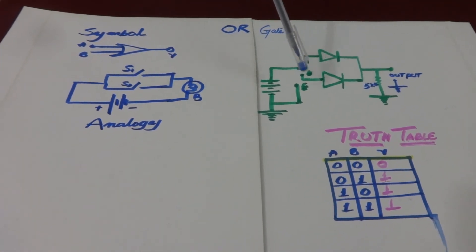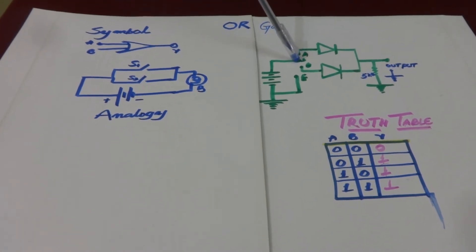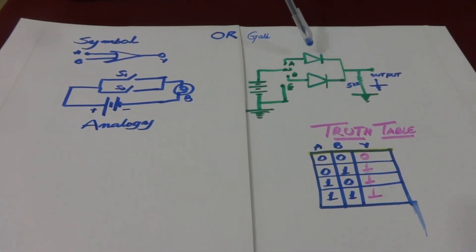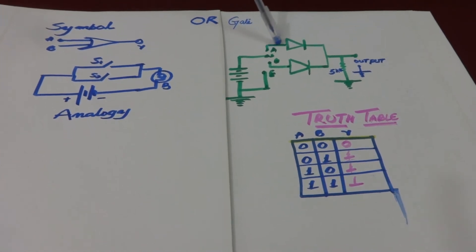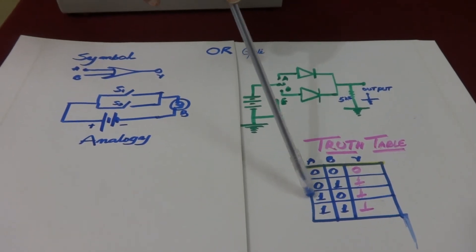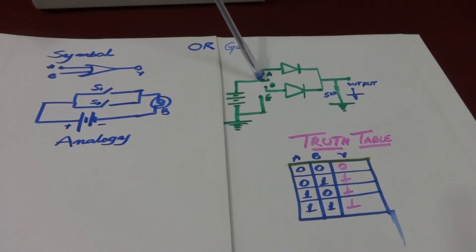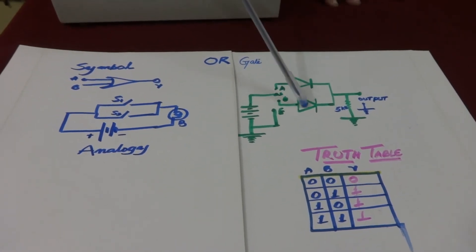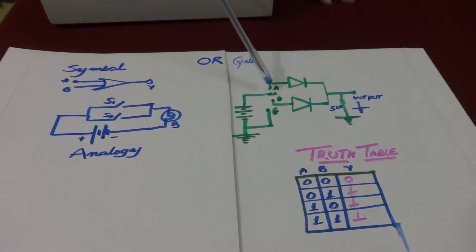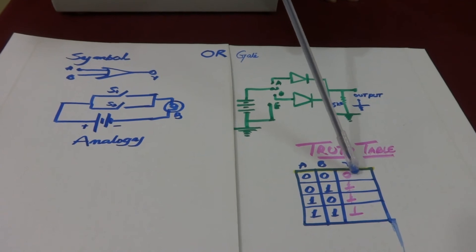When A is connected to the positive terminal and B to the negative terminal E, one diode is in reverse bias and the other is in forward bias. Current flows through the forward-biased diode and we still get output 1. Similarly, when A is connected to E and B to the positive terminal, that diode conducts and output is still 1. When both are connected to E, neither diode conducts and there is no output — representing the 0,0 input case.